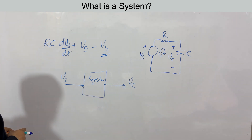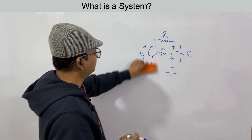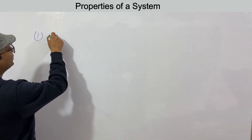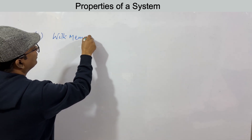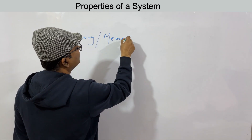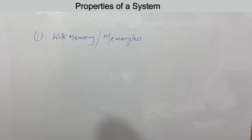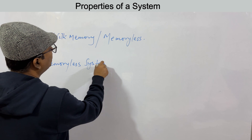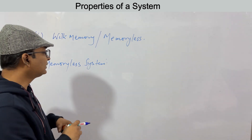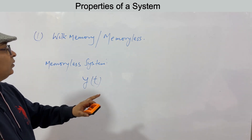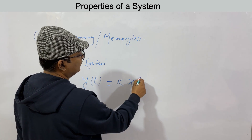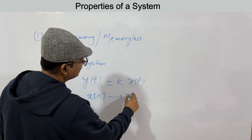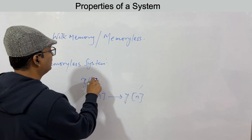Now we'll look at six properties of a system. The first property is whether a system is memoryless or has memory. A memoryless system is one where the output at any time t depends only on the input at that same time t — that is, x(t) results in y(t) — and not on any previous input values.